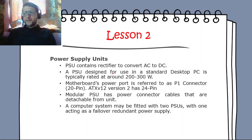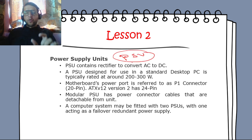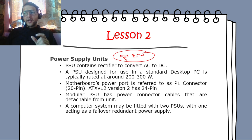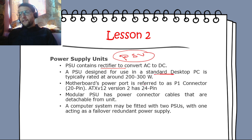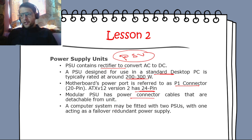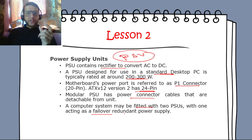Lesson 2 covers installing system devices. The PSU — Power Supply Unit — contains a rectifier to convert AC to DC. A standard desktop PSU is typically rated around 200 to 300 watts. The motherboard power port is called the P1 connector — 20-pin ATX; version 2 has a 24-pin connector. A modular PSU has detachable power cables. A computer may have two PSUs where one acts as a redundant backup.